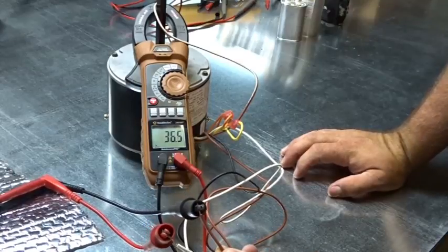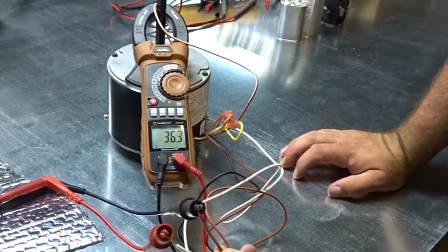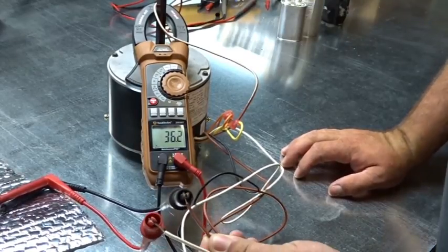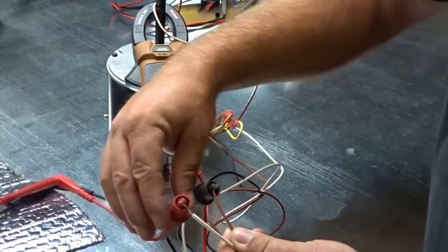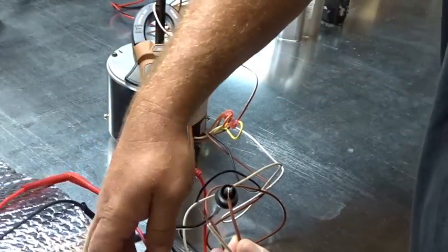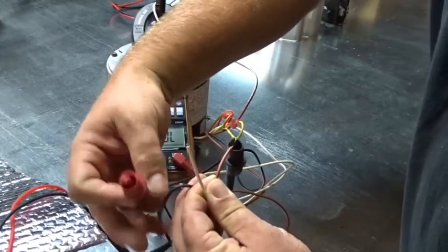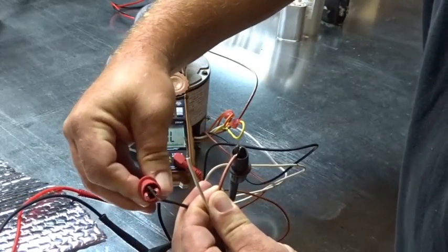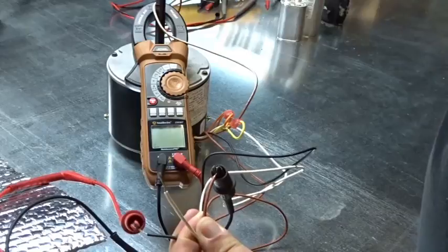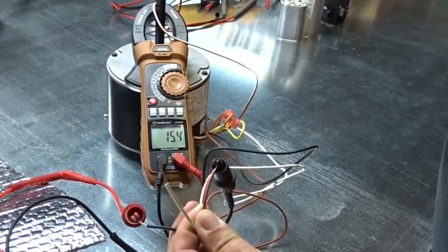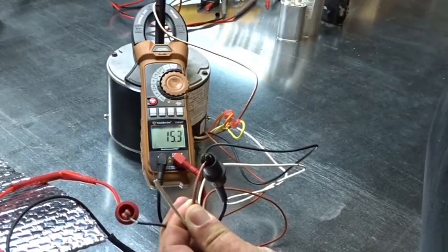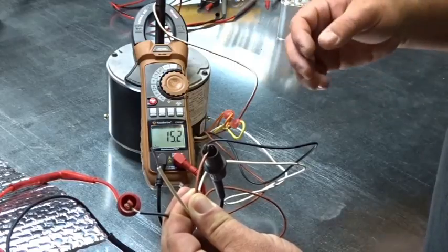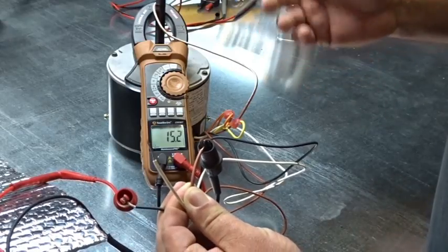So let's take the start to the common. We have 15.4 ohms. So we should have, because these two had to add up to the other, distance around 20 in between start—or in between run and common, excuse me.